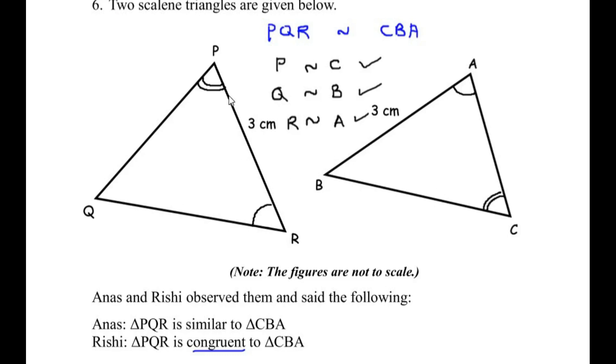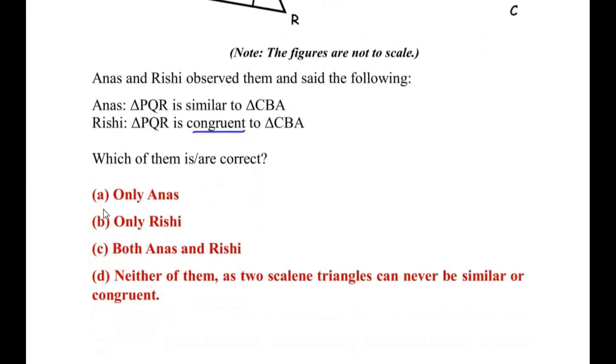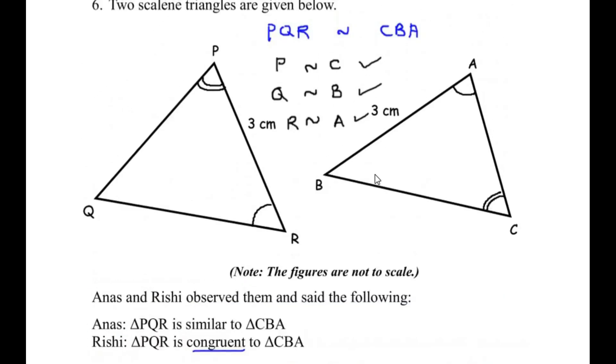So they cannot be congruent. In congruent triangles they have to be exact replica of each other. The sides have to be same. The angles have to be same. Now by observation we can say that the triangles are not congruent. So here in our options we can say only Anas is correct. Because the two triangles are similar only. Not congruent.